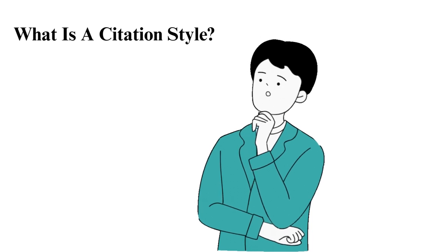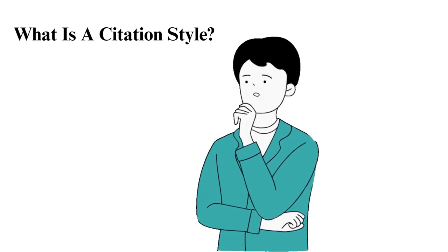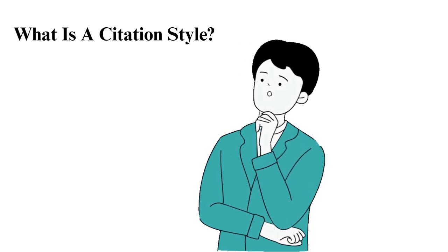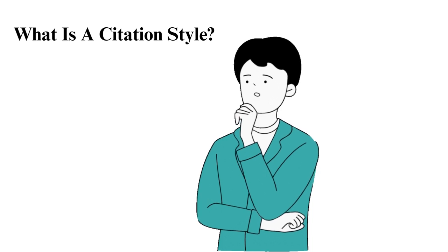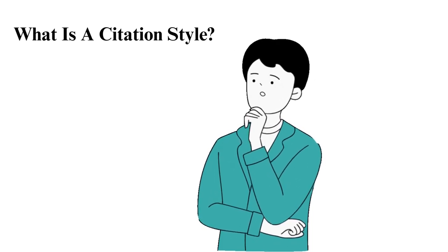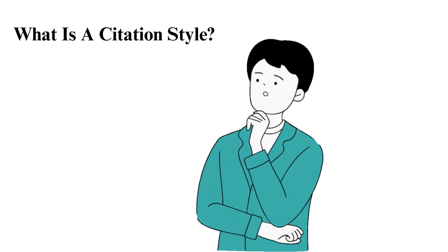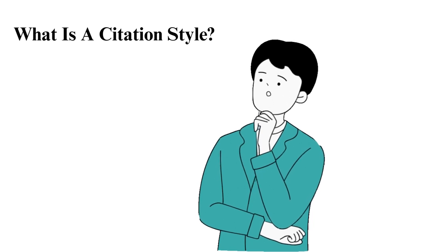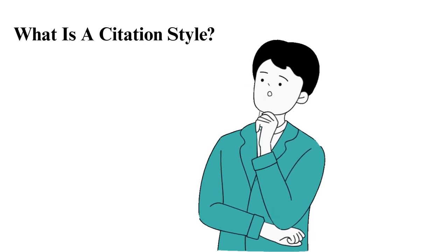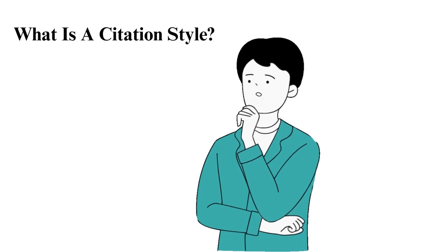What is a citation style? A citation style refers to a particular format in which one presents the sources used in an academic paper. It provides guidelines on where and how in-text citations and bibliographies are placed, and hence can change a paper's entire aesthetic.